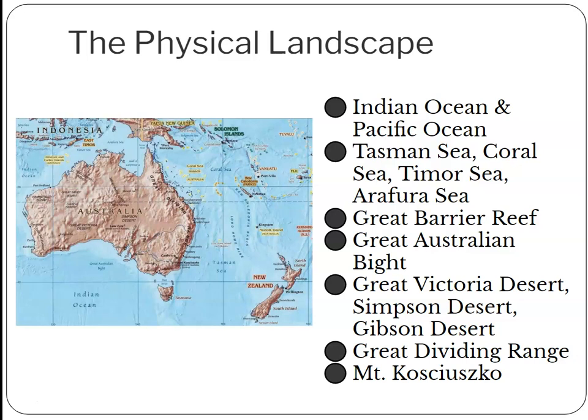New Zealand has many mountains. New Zealand's highest peak is Aoraki — Mount Cook in its Europeanized name — at 12,200 feet. Mount Tasman is 11,400 feet. You can already see the considerable difference between Australia's highest peak and New Zealand's highest peak. In general, New Zealand is a much more mountainous country than Australia.